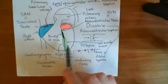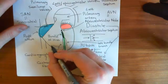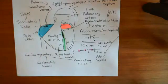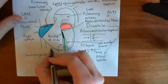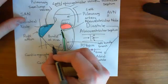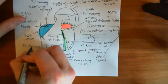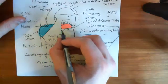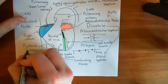The right and left bundle branches spread onto more fibres that distribute among the base of the ventricles — right and left — and deliver the electrical stimulus to the normal contractile cardiomyocytes. These fibres that spread amongst the normal contractile cardiomyocytes are known as Purkinje fibres. The Purkinje fibres, the right and left bundle branches, the bundle of His, and the AV node are all conducting cardiomyocytes.